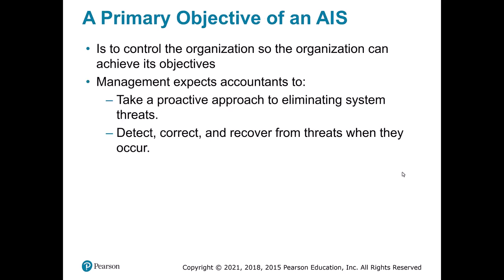An AIS should help an organization operate well, so we try to design the system to achieve our goals. This means a proactive approach — designing things to make sure problems don't occur rather than just responding to bad things after the fact. And when threats do actually occur, we want to correct and recover from them as well.